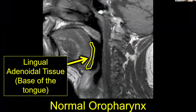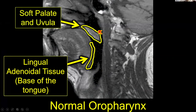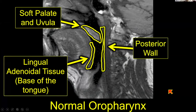We can also see that pretty well on MR. On a sagittal T1 at midline without contrast, we see the lingual adenoidal tissue or base of tongue in the back. We include the soft palate and uvula as part of the oropharynx, along with the posterior wall. The soft palate has a very high concentration of minor salivary gland tissue, so we can get minor salivary gland carcinomas there, but squamous cell carcinoma is far and away the most common.